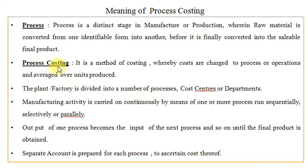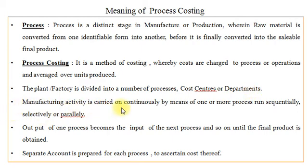Process Costing is a method of costing whereby costs are charged to process or operations and averaged over units produced. The plant or factory is divided into a number of processes, cost centers or departments. Manufacturing activity is carried on continuously by means of one or more processes run sequentially, selectively or parallelly. Output of one process becomes the input of the next process and so on until the final product is obtained.